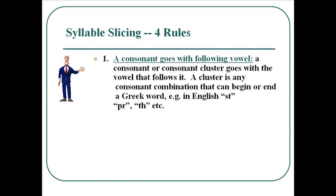First of all, a consonant or a consonant cluster goes with the vowel that follows it. A consonant cluster is like in English when you have two consonants that combine into a unit, similar to like ST, like START, or PR, like PROVIDE, or TH, like SAITH. Consonant clusters can also go to three consonants, like the string STR that begins the word STRING.